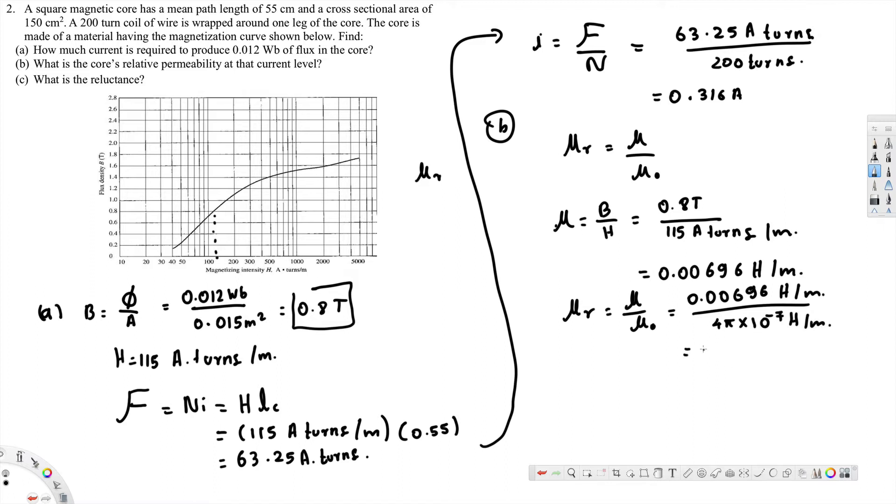Now part C is asking what is the reluctance. To find out the reluctance we use this formula: reluctance is equal to magnetomotive force divided by phi.